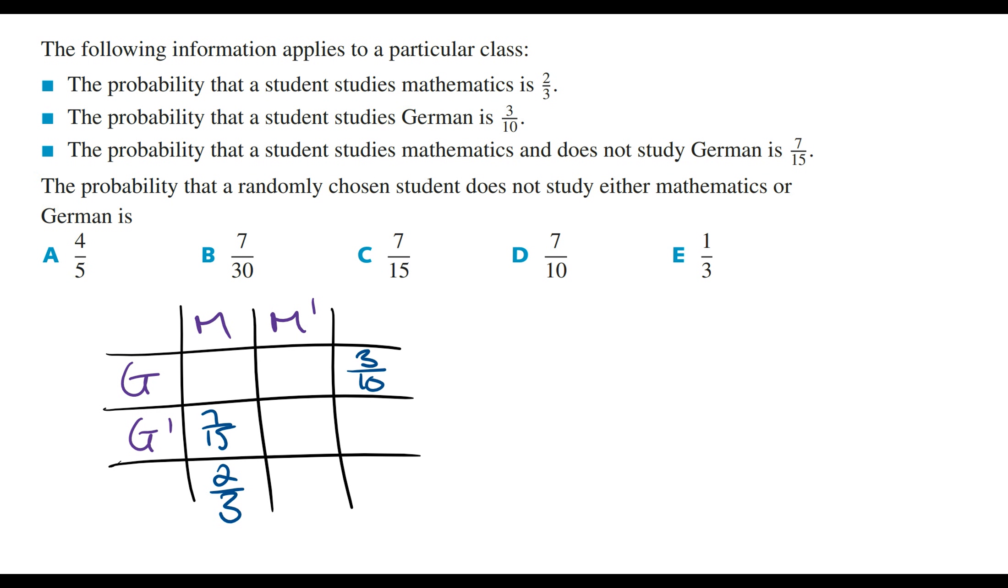We know that the sum of all the probabilities is going to equal 1, and so this box is going to equal 1. The probability that a student does not study either maths or German is going to be this box.